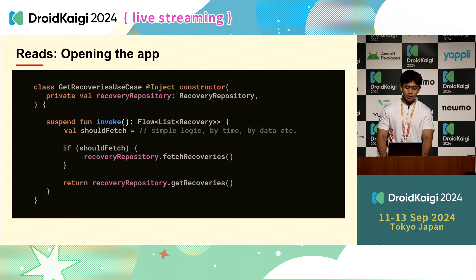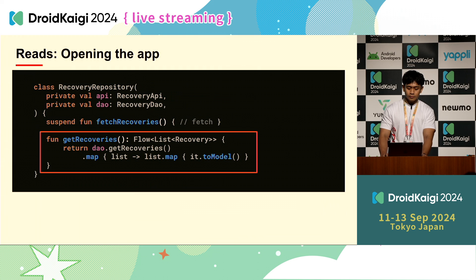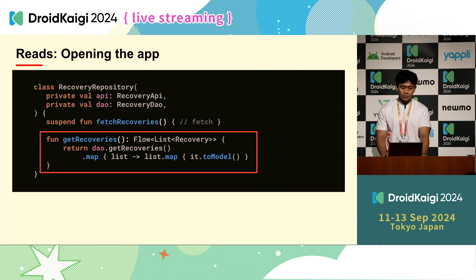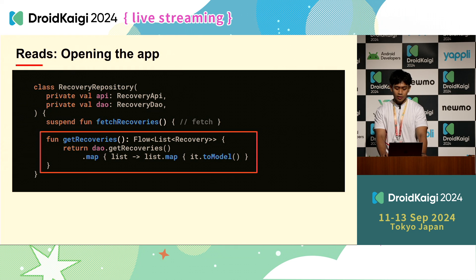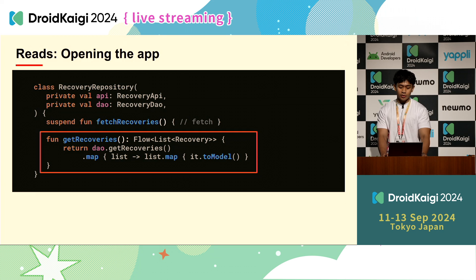Let's look at our repository. The get recoveries function directly gets data from DAO, which means we can just return the data. Our get functions return a Flow, which allows us to update subscribers when there are updates from the API. So basically we get from DAO, map it to our model class, and return it as a Flow.